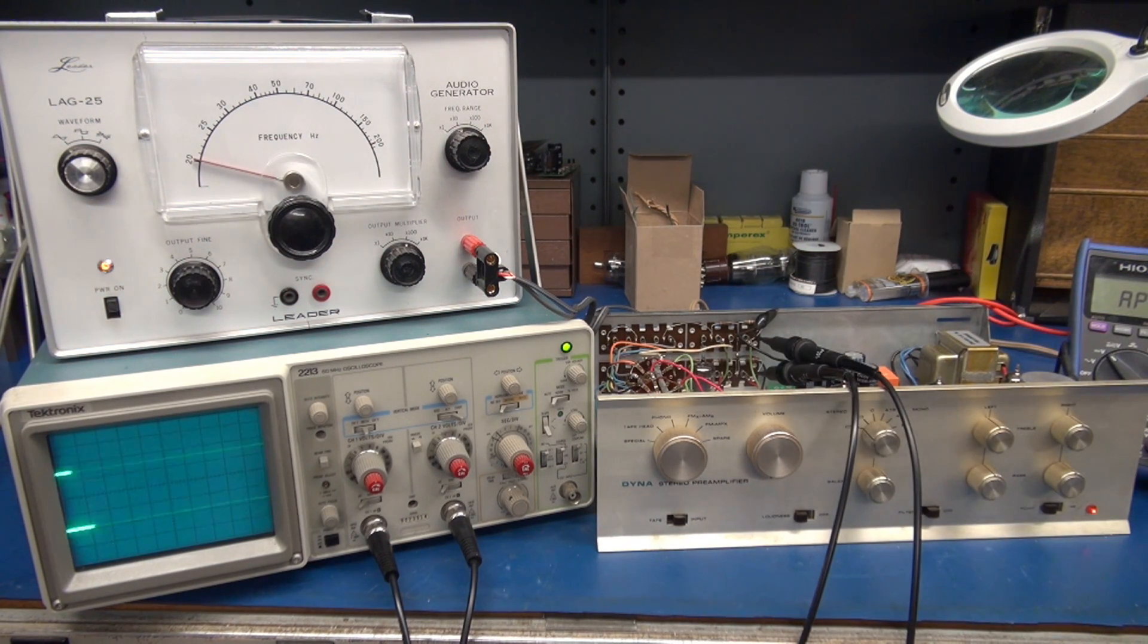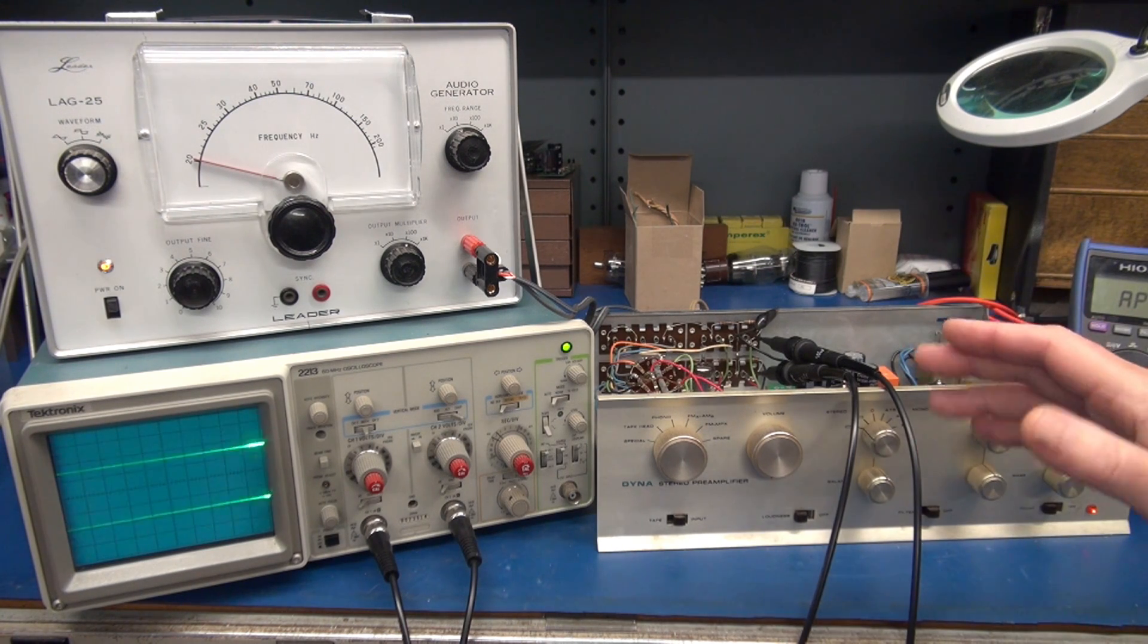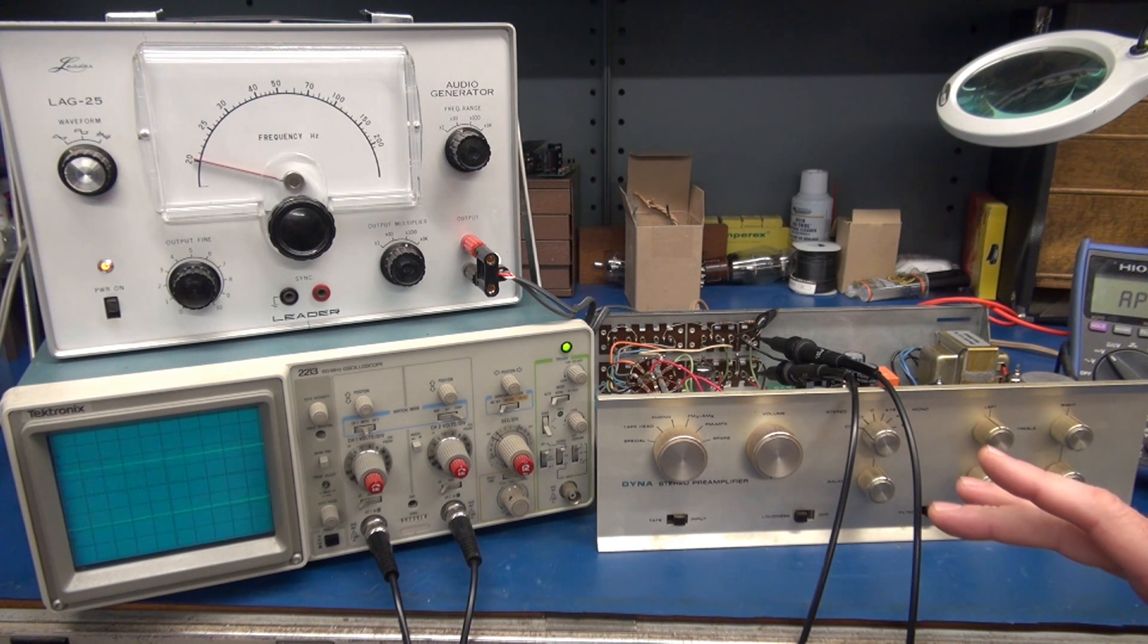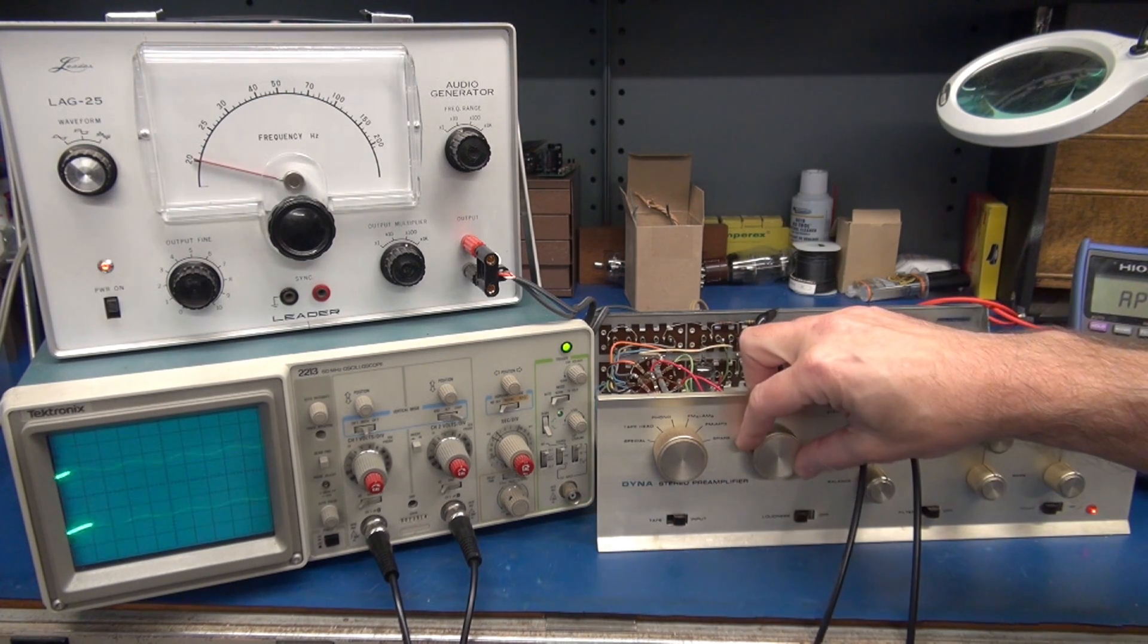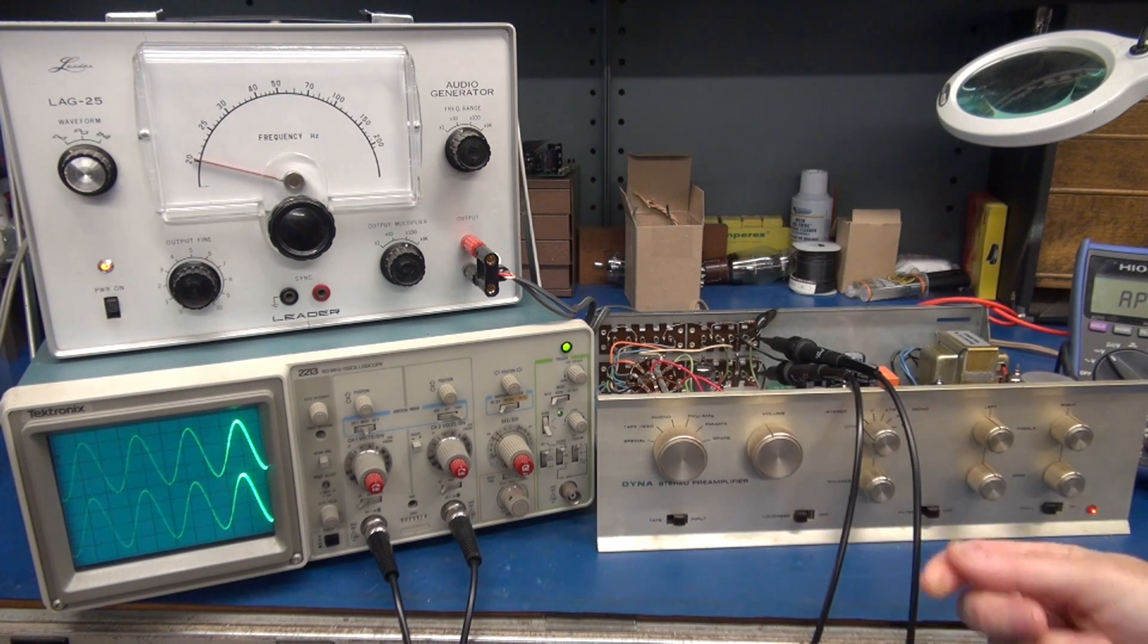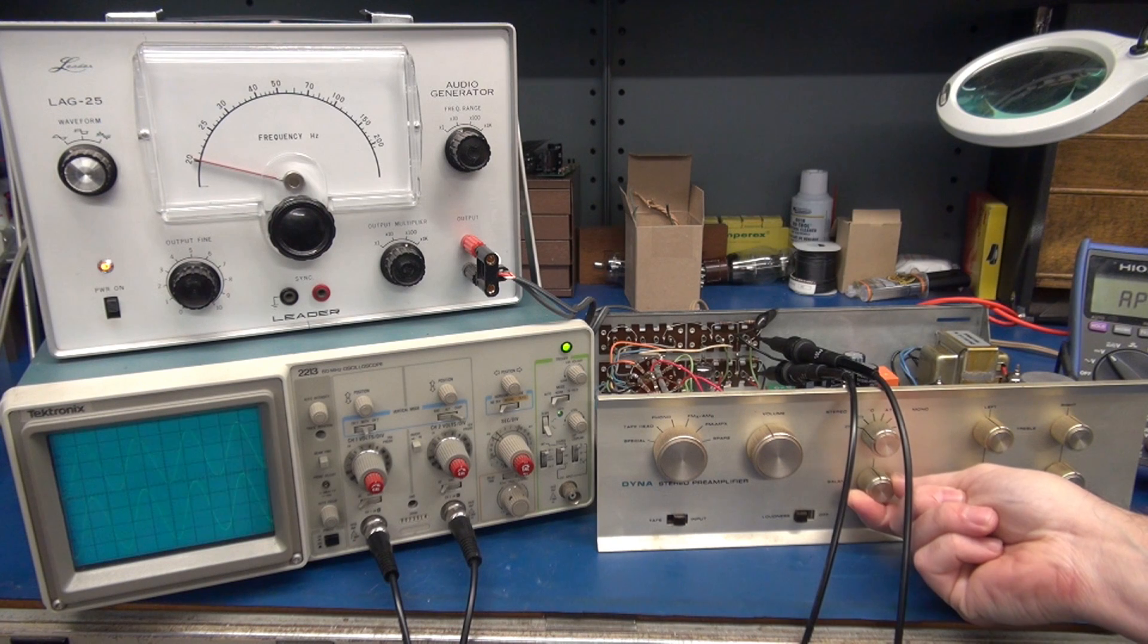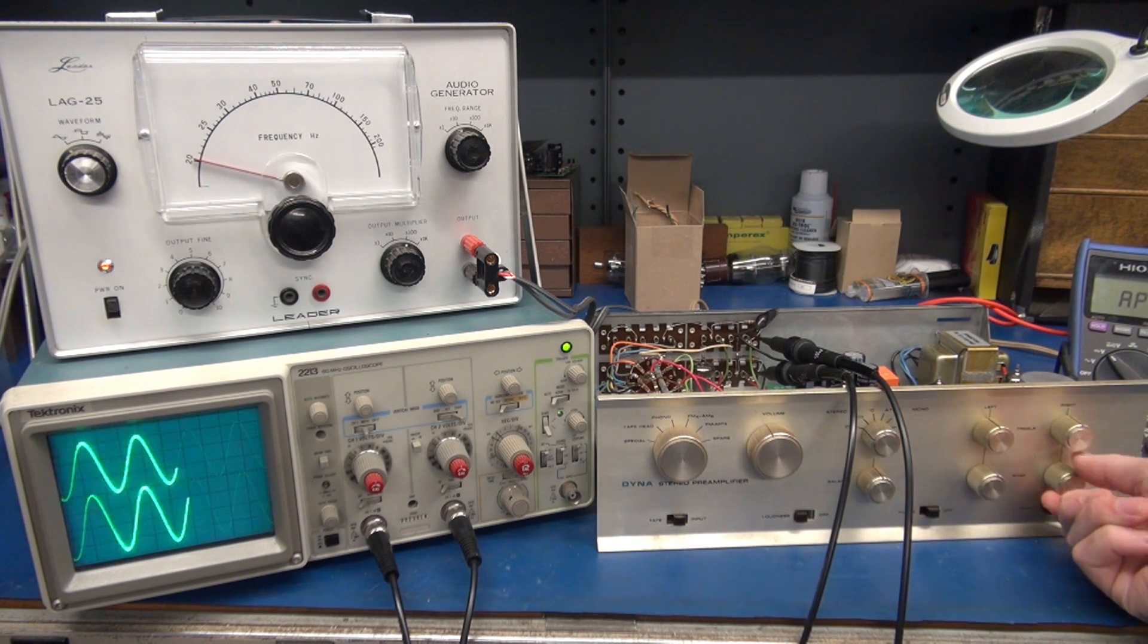Now we're going to check the high level inputs. In this case, I have elected to use FM as my selection. Audio generator is going to be set to sine wave 200 hertz out at 100 to 150 millivolts. Same deal. Let's bring up our volume. Here is my left and right output. Check our balance. That's good. Here is the base pot. Here is the other one.